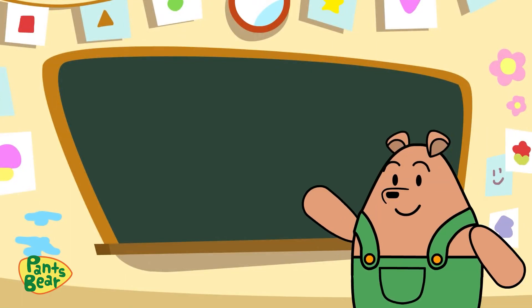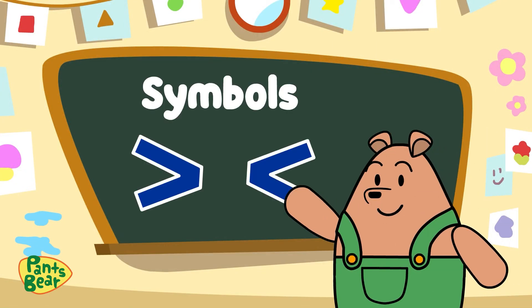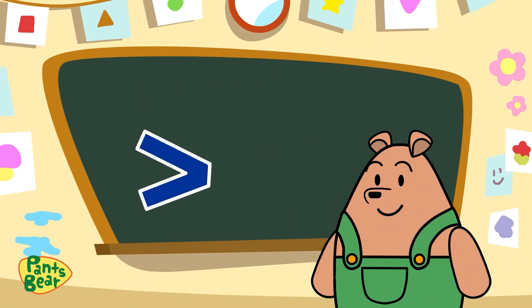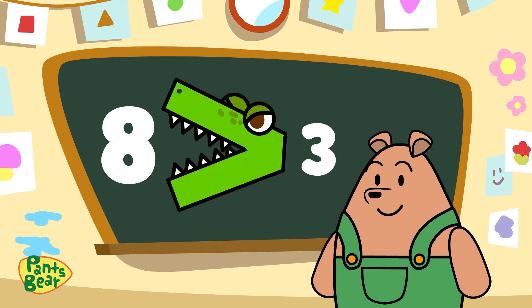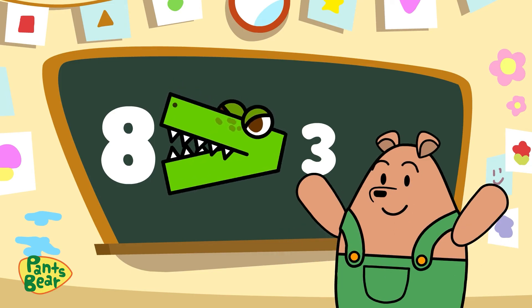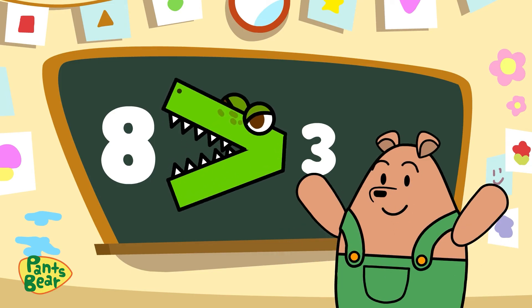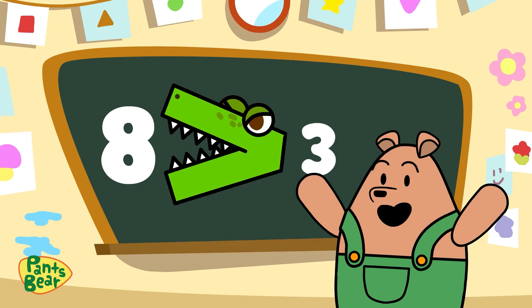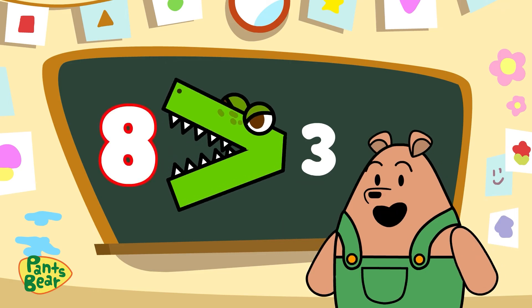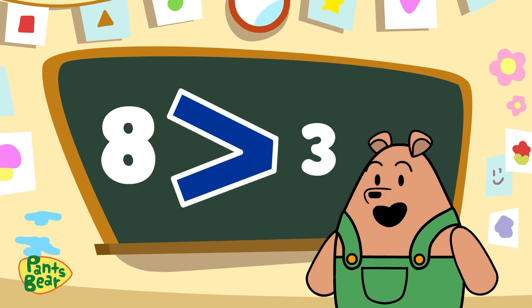It's easy to remember how to use the symbol. Imagine the symbol as a crocodile who wants to eat something bigger. The open mouth always faces the larger number.